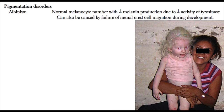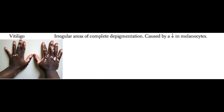The other type is oculocutaneous albinism. As the name implies, the eyes, skin, and hair are all affected by a decrease in melanin production. These patients are going to have an increased risk of all types of skin cancer.